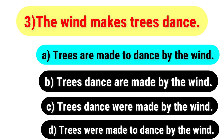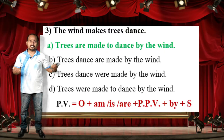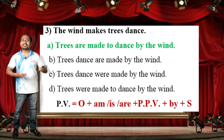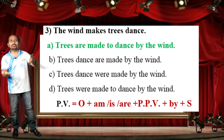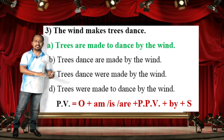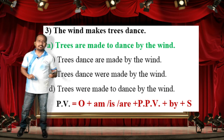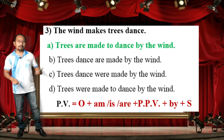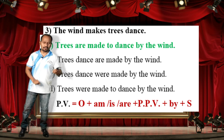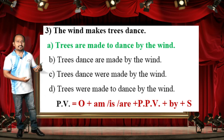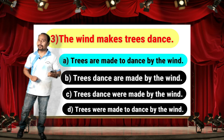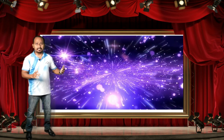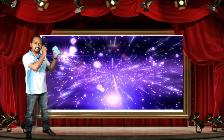The correct answer is: 'Trees are made to dance by the wind.' The given sentence is in simple present tense, and the passive voice formula is: Object + am/is/are + PPB + by + Subject. Using this formula, the correct answer is 'Trees are made to dance by the wind.' Students, don't be confused — watch the sentence carefully and choose the correct answer.